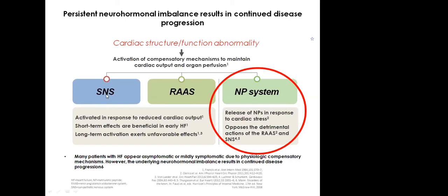The two deleterious cascades are the activation of the sympathetic nervous system and the activation of the renin-angiotensin-aldosterone system. There is another system in the heart which is beneficial but unfortunately short-lived — that is the natriuretic peptide system, where the atrial natriuretic peptide and the B-type natriuretic peptide are naturally occurring peptides released by the myocardium in response to cardiac stretch and stress. Unfortunately, the products of this system are usually short-lived.